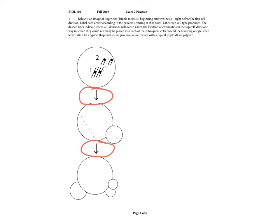Based on what's drawn here, this circle represents a cell. It's oogenesis, female meiosis, right after synthesis. So it's an oocyte about to go through meiosis. We go from one circle above the arrow to two circles below. What's this process? Division one.